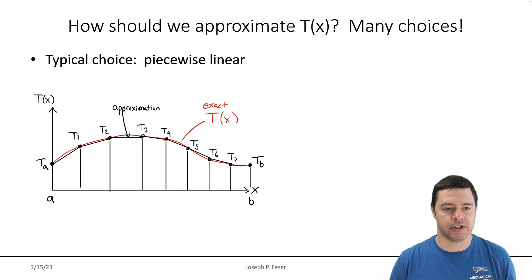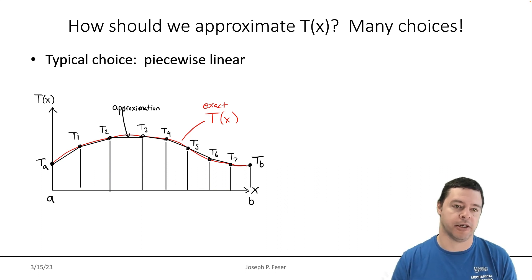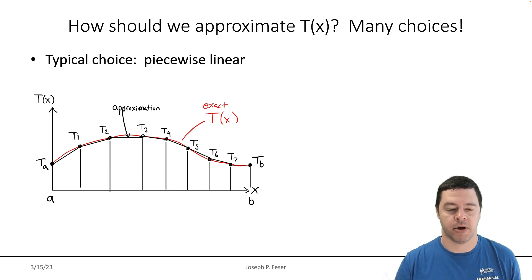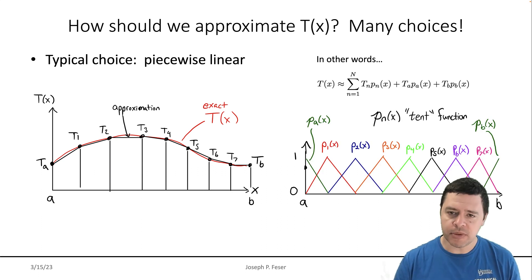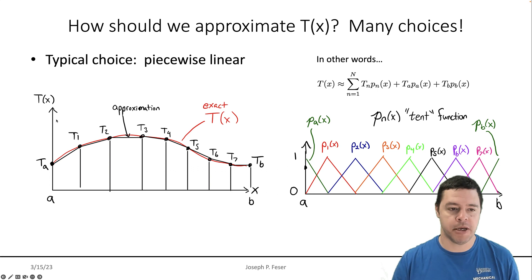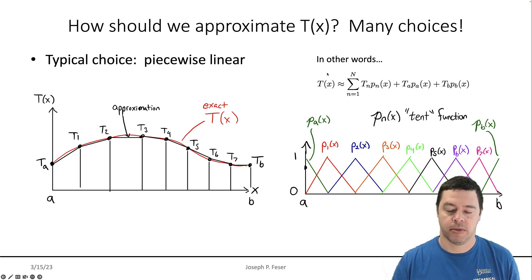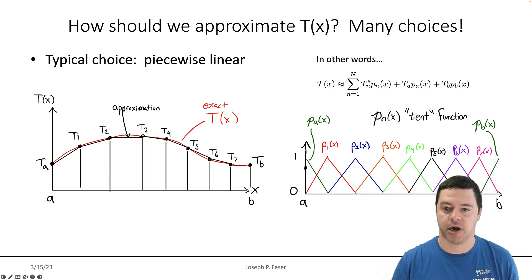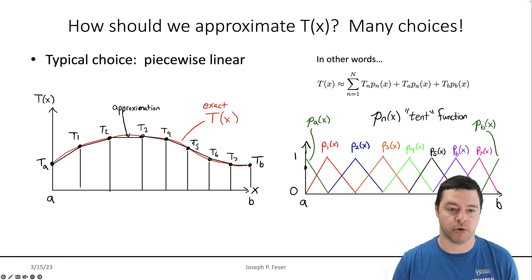Let me put that a slightly different way. Graphically we can understand that this is a pretty good way to interpolate the solution and approximate the temperature profile. What I mean by that piecewise linear approximation is that I'm going to write the temperature of X — my approximate solution — as some coefficients T sub n, like T1, T2, T3, T4, T5, T6, T7, times some basis functions.